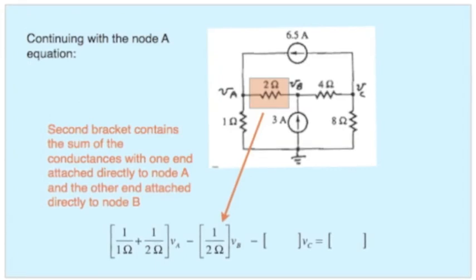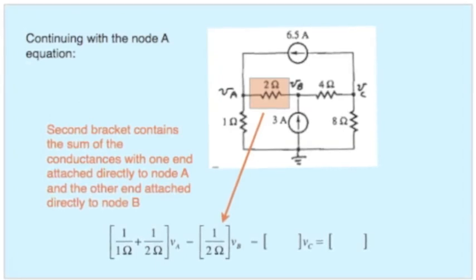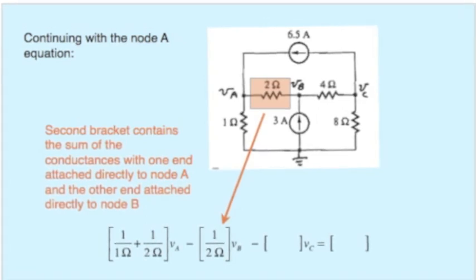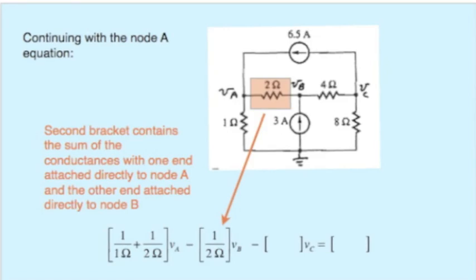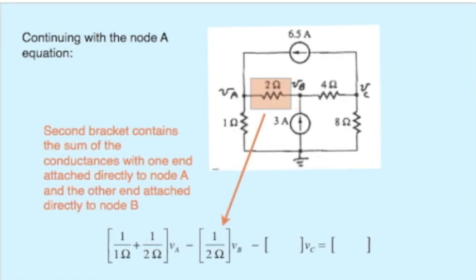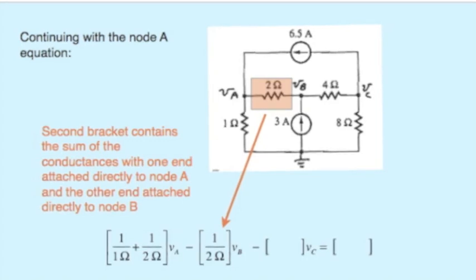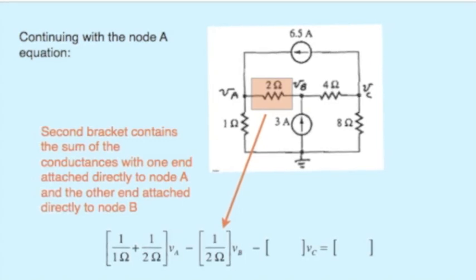The quantity in front of V sub B in this equation comes from any resistors that have one end on node A and one end directly on node B. There's only one of them in this case, a 2 ohm resistor. So we multiply V sub B by 1 over 2 ohms, or 0.5 Siemens, and note the minus sign.